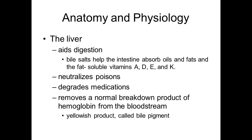For your liver: it aids in digestion — really important for fat digestion is the bile produced by the liver and stored in the gallbladder. Not only fats, but many vitamins are fat-soluble, so we can't absorb them without the ability to absorb fats. Vitamins A, D, E, and K are very dependent on bile and bile salts for their absorption.